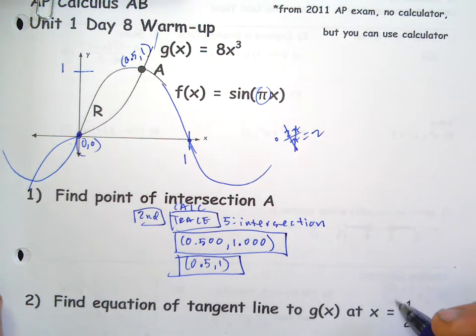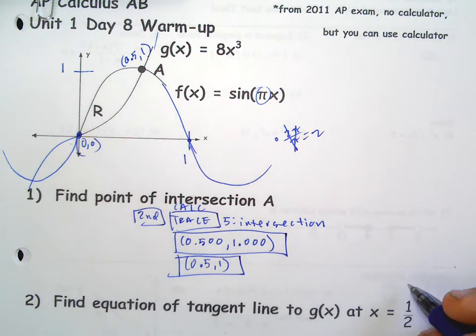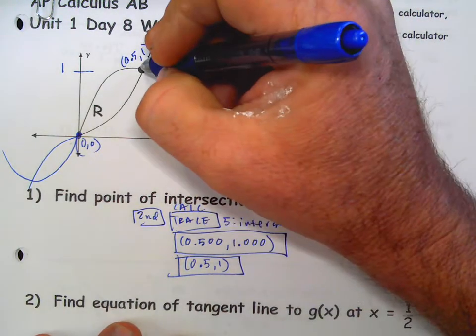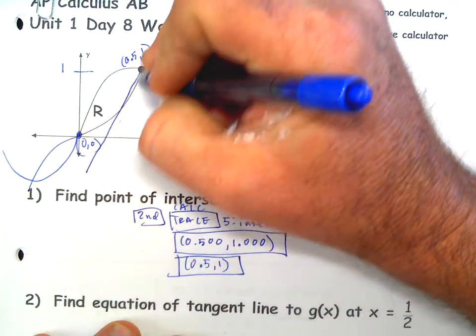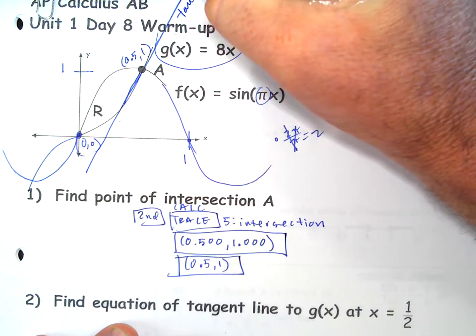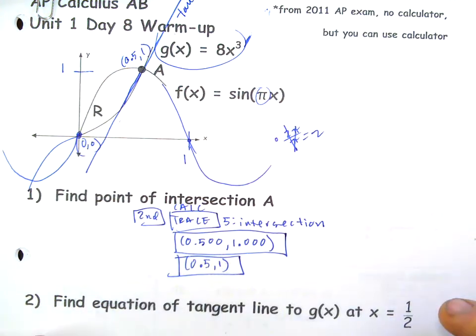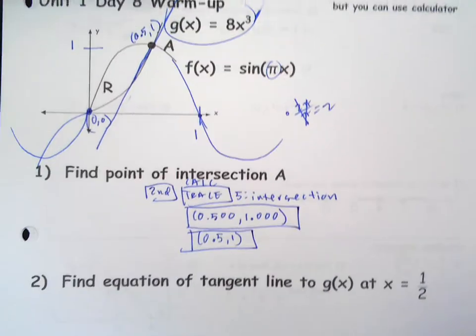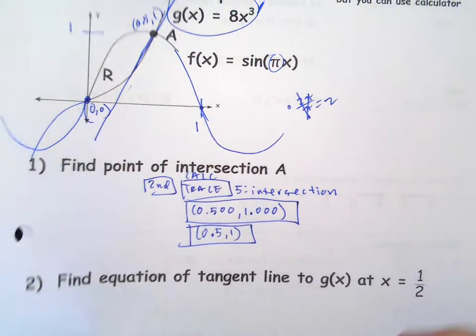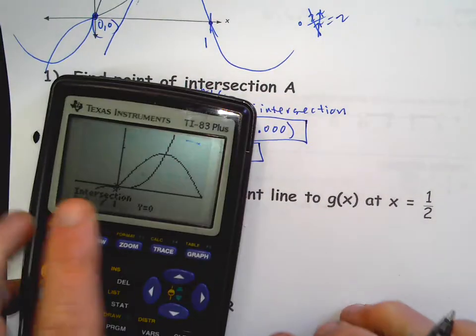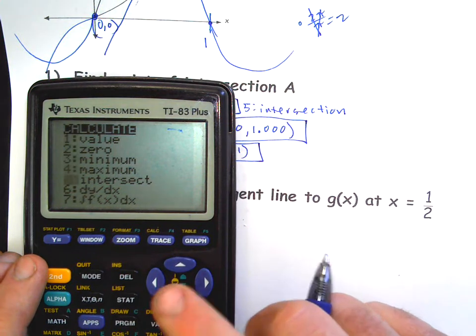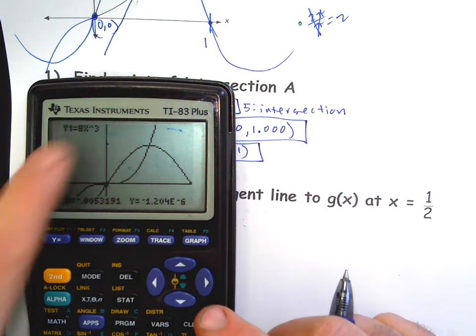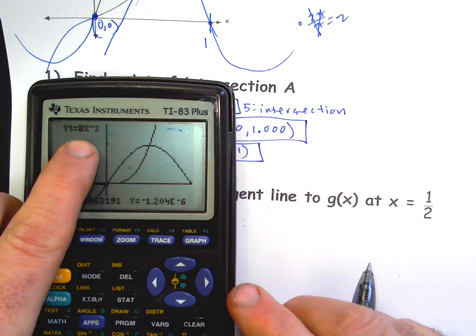Okay, so find the equation of tangent line to g(x) at x equals one half. Well, that's this right here, the tangent line to g(x) specifically. So we could kind of sketch it in roughly. That's the tangent line. And so there's two ways we could do this. We already have a point, right, and you need a slope. So we could use your graphing calculator, second calculate, number six dy dx is the derivative.